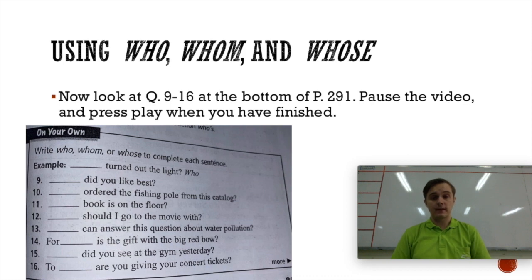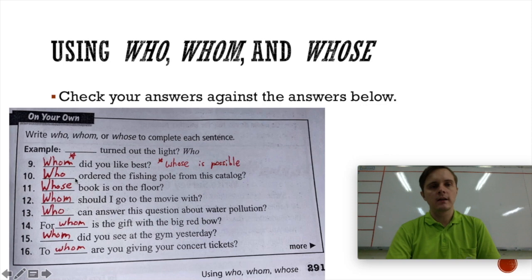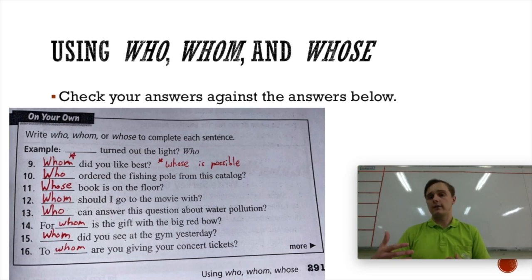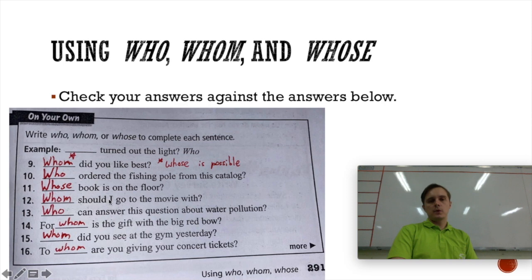Okay, have you finished up to number 16? If you have, you can keep watching for the answers. Number 9 is actually a bit tricky. I'm happy to give you two answers here. You could say, whom did you like best? Like, you liked whom the best. You liked Tan the best. But you could also say whose. Maybe two people have made you a cake. Maybe Madge made you a cake, and maybe Chewp made you a cake. Whose cake did you like best? So, I will accept whose for that, but it should be whom or whose and not who. Number 10. Who ordered the fishing pole from this catalogue? You need subject pronoun, who. Like, if I said, Crook ordered the fishing pole, Crook would be the subject. Number 11. Whose book is on the floor? So, to whom does the book belong? Number 12. Whom should I go the movie with? The answer to that question would be the object, because the subject would be, I should go to the movie with. Number 13.